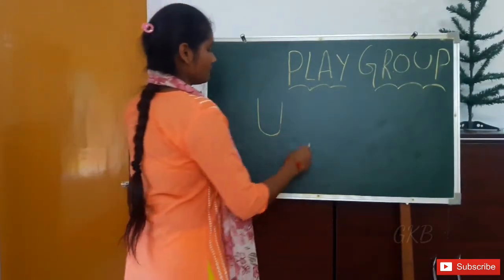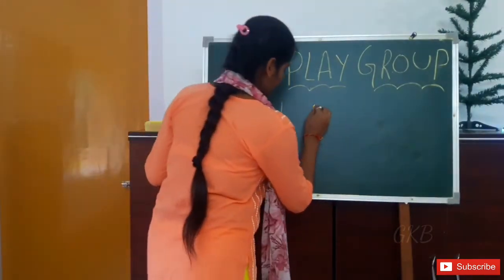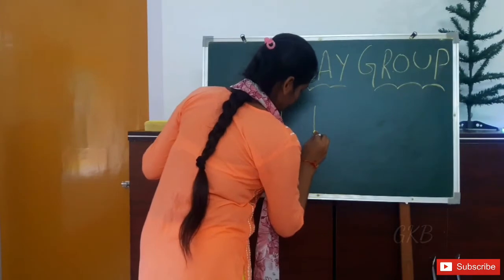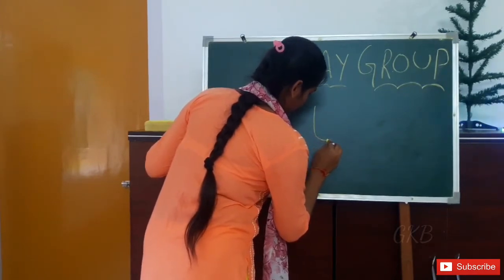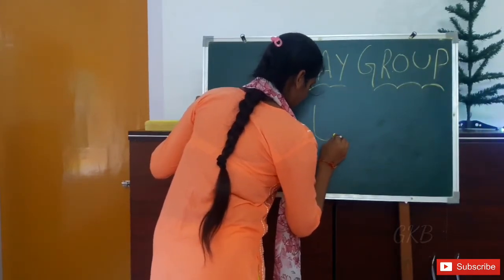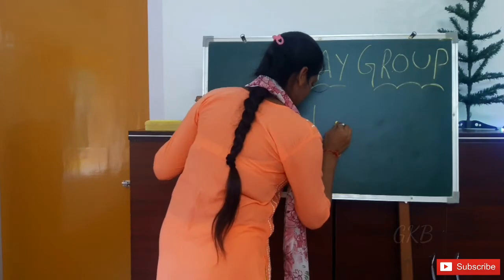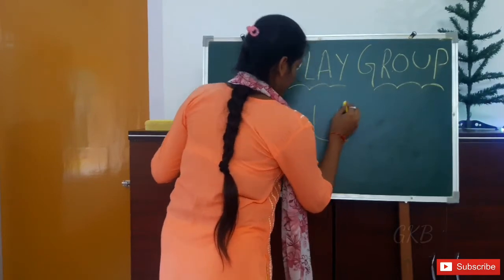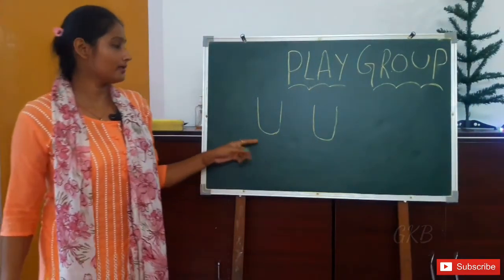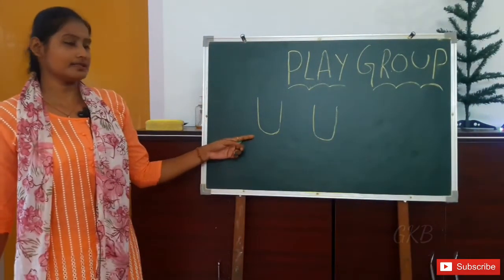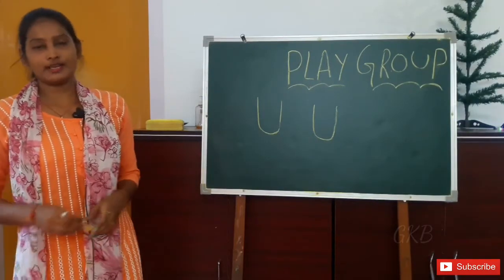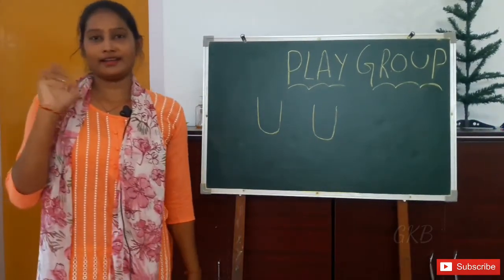Once more — draw a standing line, then slightly curve, then draw a standing line up. What is this? This is U! Thank you, bye bye.